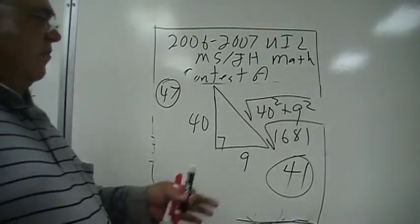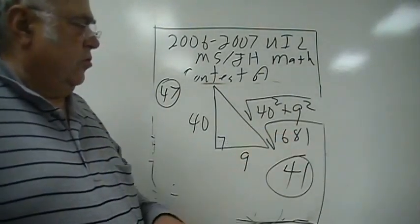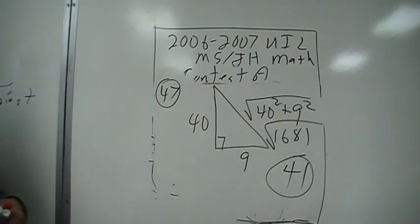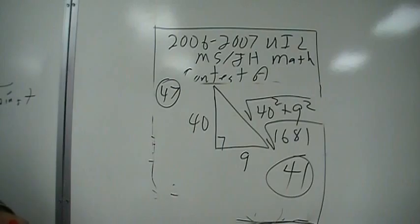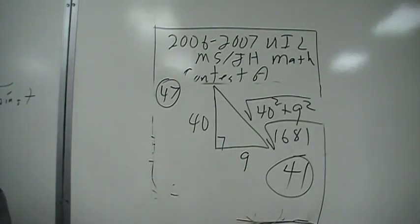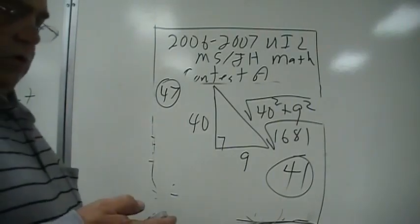There's an algorithm for finding square roots — I need to put that on a video sometime and show you what that is. It's pretty easy really, it's not something they teach anymore. But it works out to be 41; 41 times 41 is 1681.